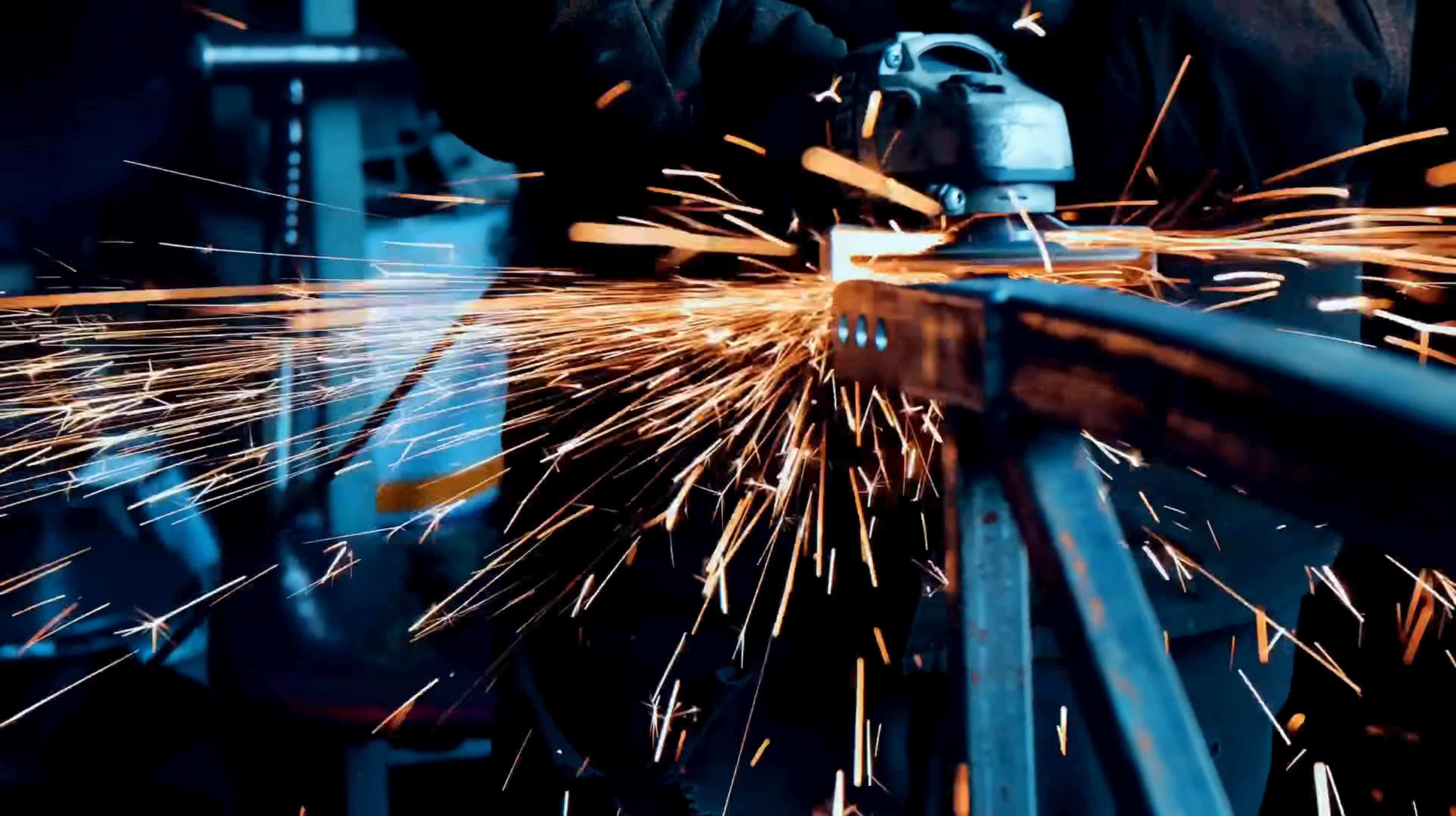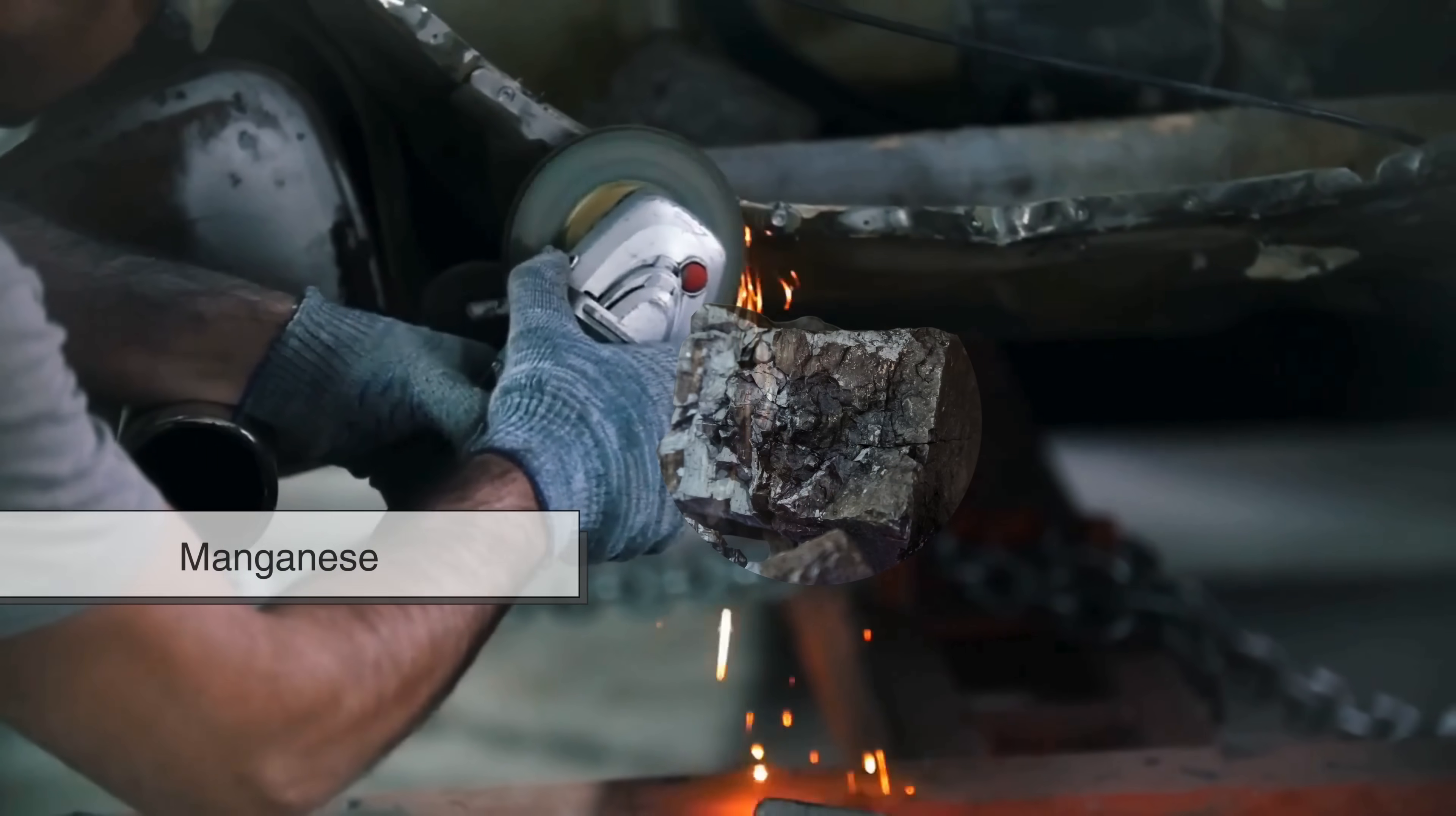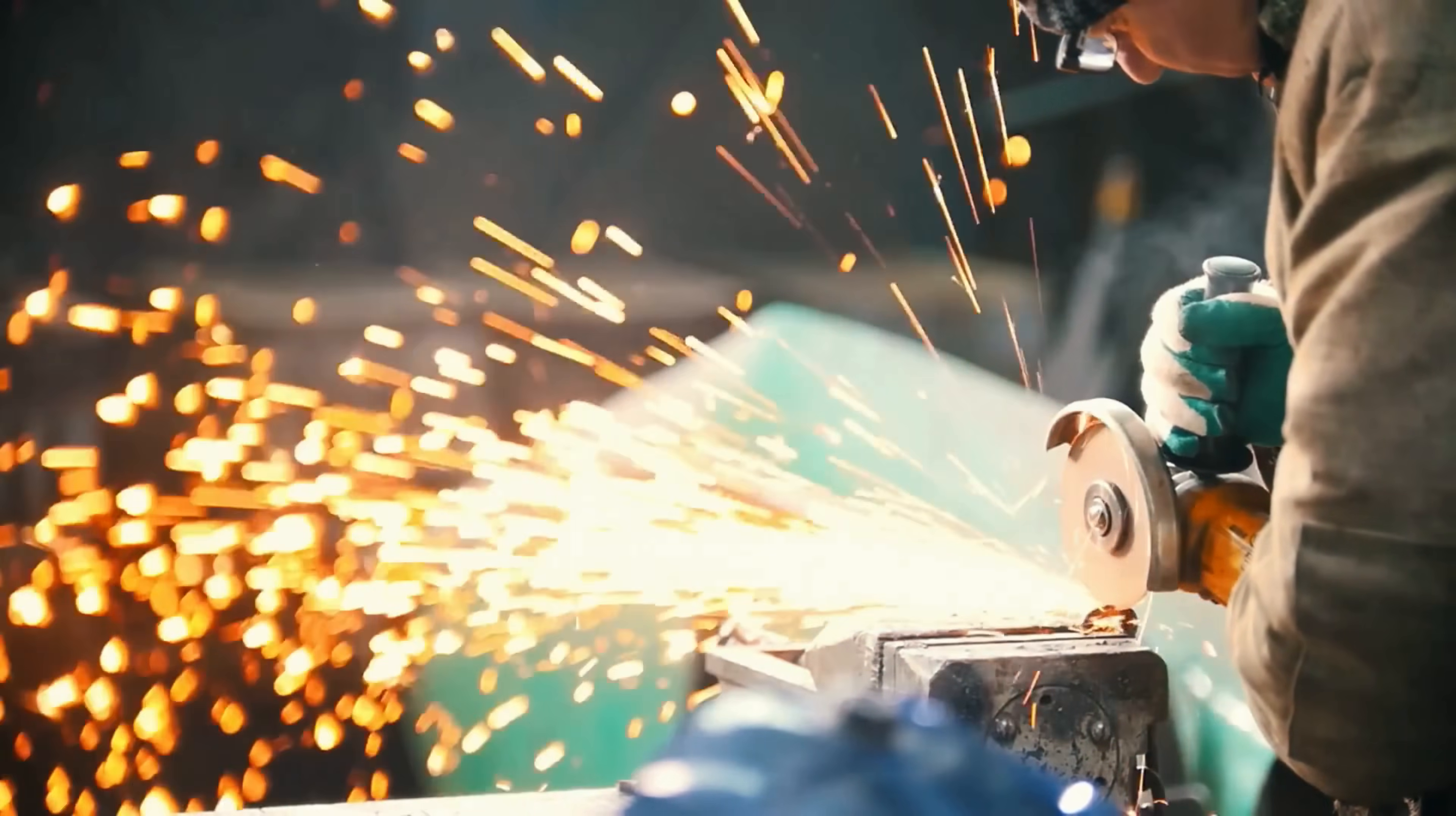On the other hand, lower carbon steels create longer, straighter sparks because the particles stay more intact. The presence of additional elements, such as manganese, chromium, or nickel, can also affect the appearance of the sparks, subtly altering their brightness, intensity, and movement.